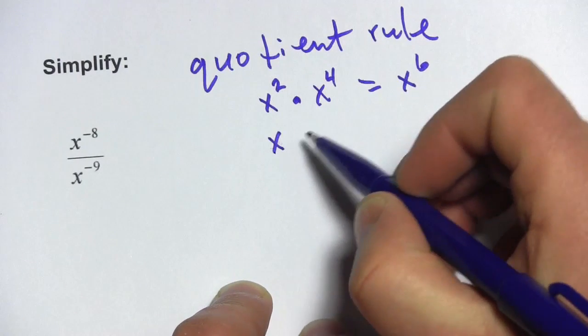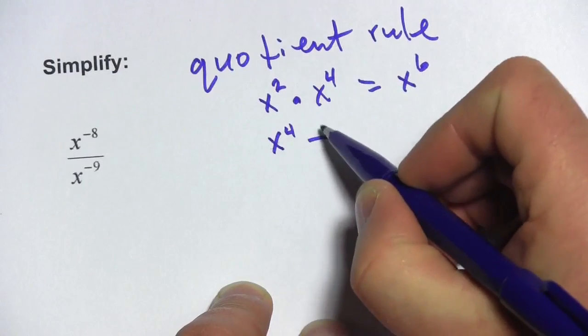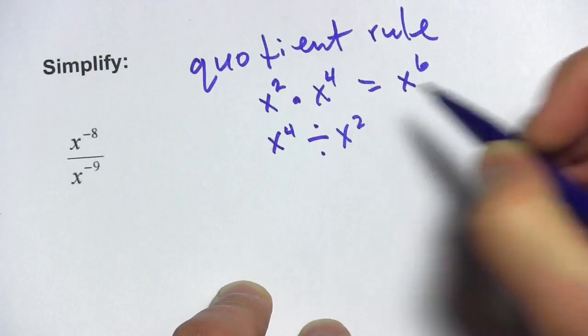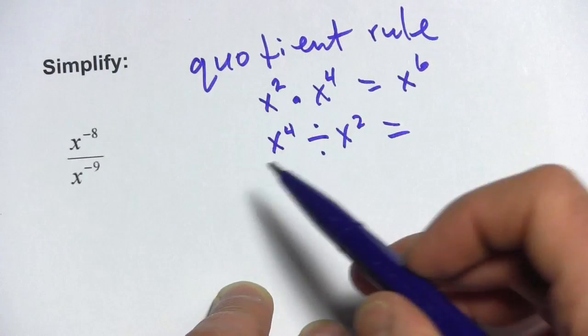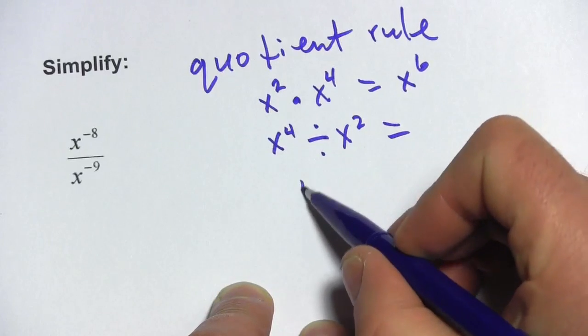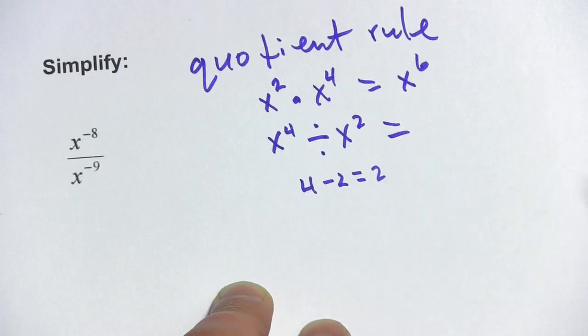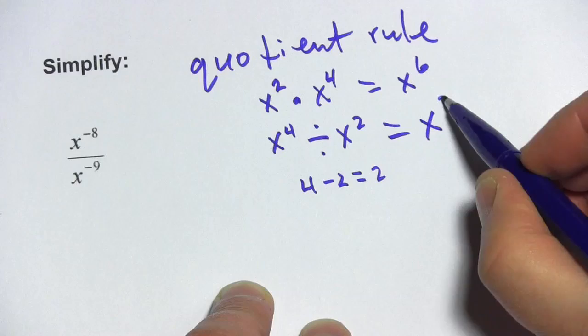If you're dividing, let's say you have x to the fourth divided by x squared, you do the opposite, you subtract. So this really is 4 minus 2 which equals 2, so that is x squared.